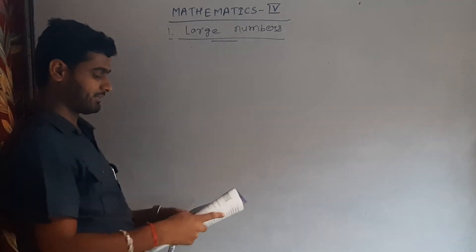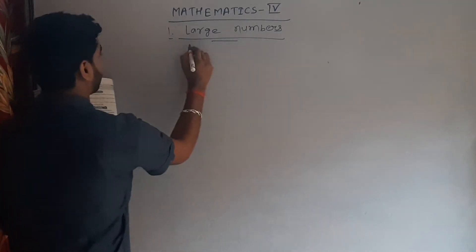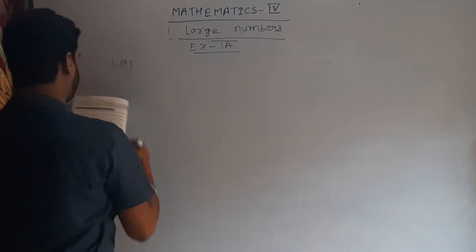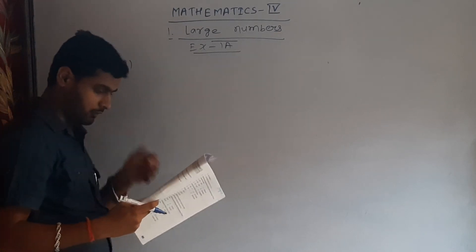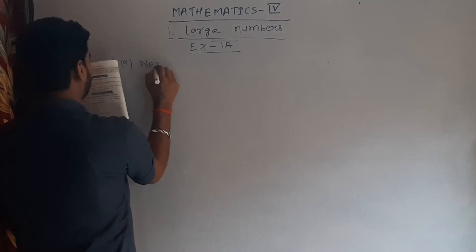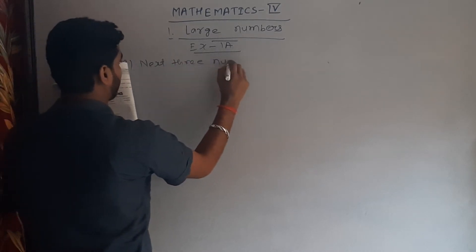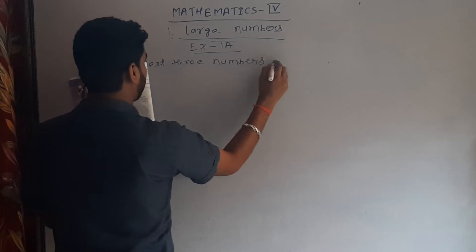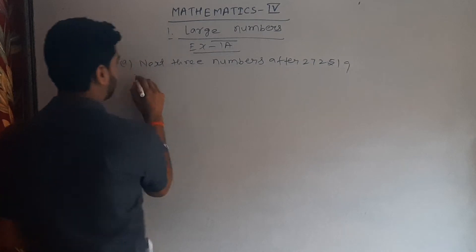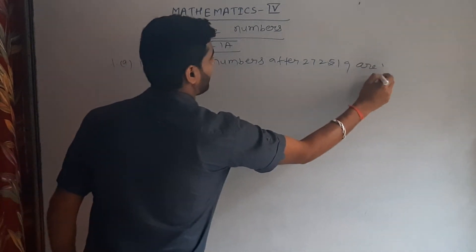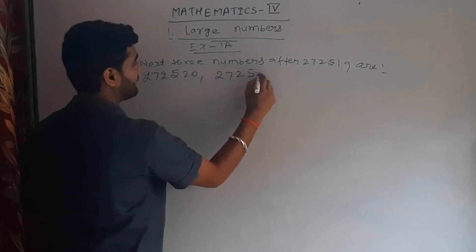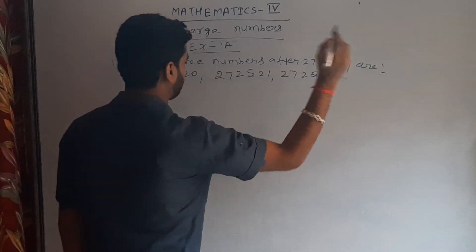Now we start our first exercise 1a. Question number one: write the next three numbers. 27,25,19; 27,25,20; 27,25,21; 27,25,22.